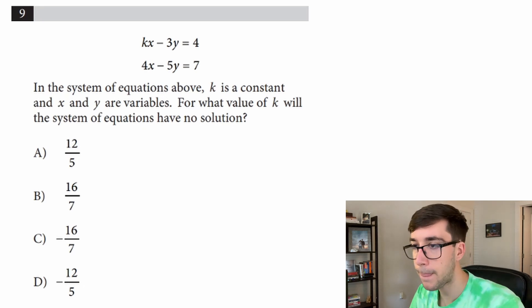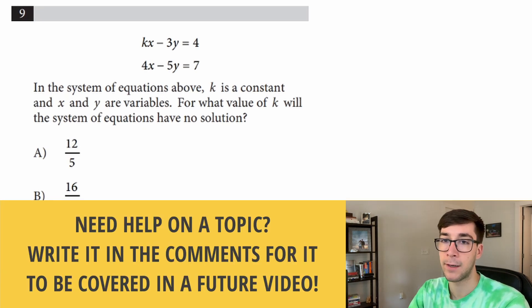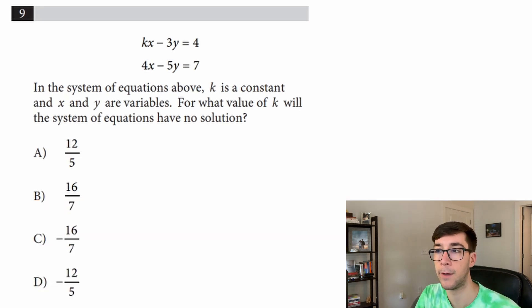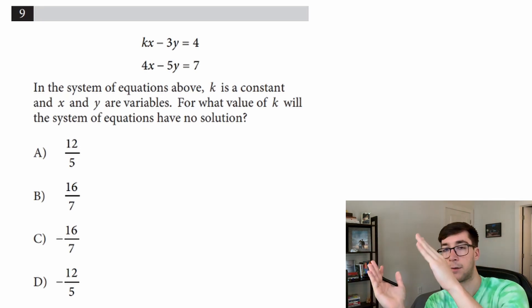They're not in the nice y equals mx plus b format, but what we can do is make sure that the x and the y are in the same ratio because then they're the same equation except for the number here which is the y intercept. The y intercept just controls how high or low it is. So if they're the same equation, one will be up here, one will be down here, they'll never touch. So let's just make sure the x and the y are in the same proportion.